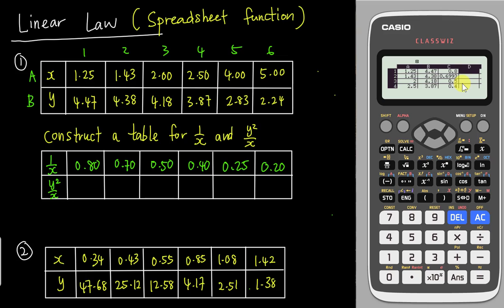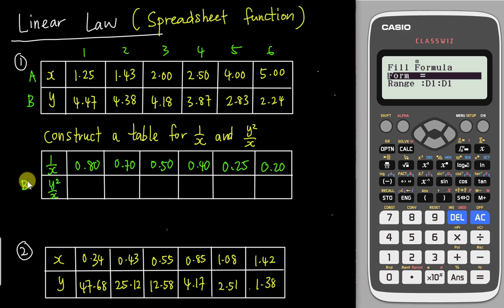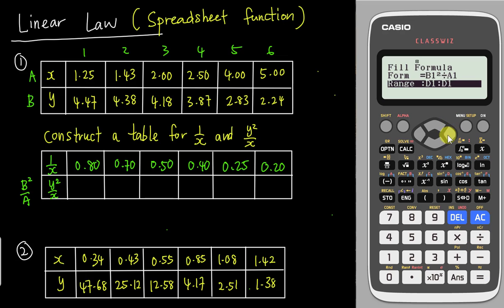Now go to column D for y²/x, which is slightly more complicated. Go to option, Fill the Formula. Your y is column B, so the formula is B squared divided by A. Enter: Alpha B, square it, then divide by Alpha A. Use B1 and A1 to specify the first row, and set the range from D1 to D6. Tap Enter and the calculator will compute all rows automatically.